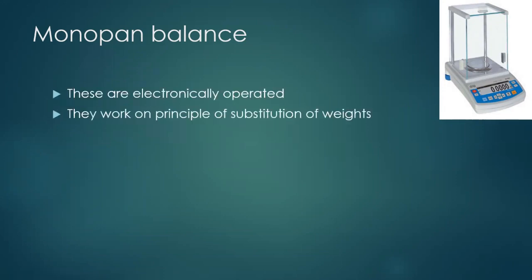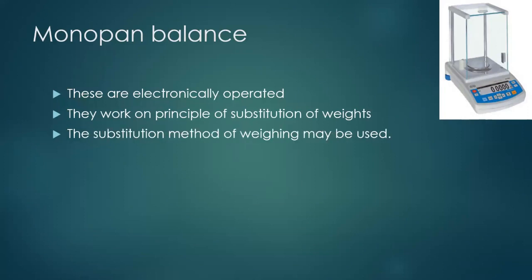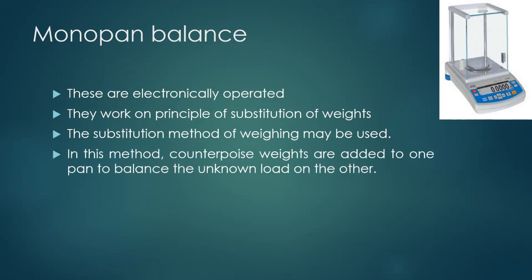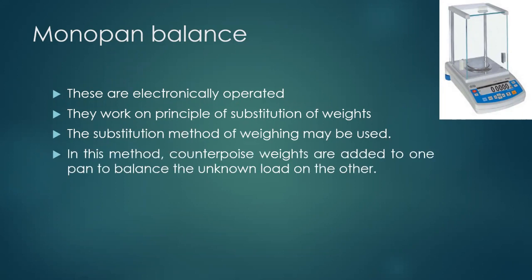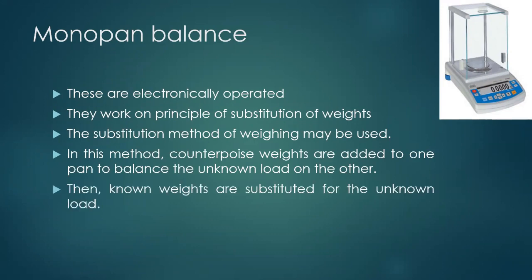Monopan balances work on the principle of substitution of weights. In the substitution method of weighing, counterpoise weights are added to one pan to balance the unknown load on the other. Known weights are then substituted for the unknown load, and we keep adding until the scale is balanced.